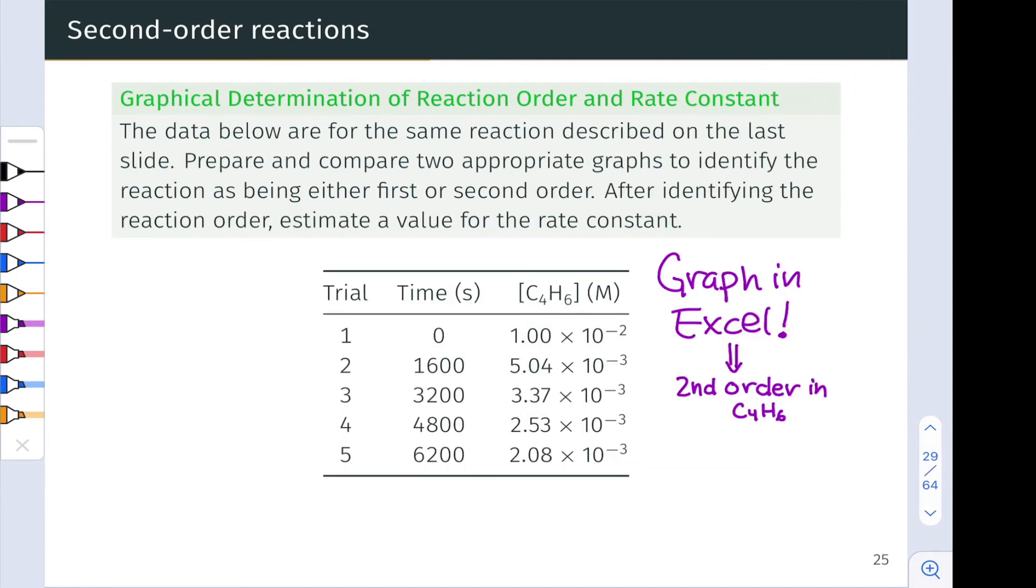As with the second problem, I don't want to spend a ton of time on this one because it's going to require you to do some graphing in Excel. We have the data for the reaction in the previous problem, the dimerization of butadiene. And this problem asks us to verify that this reaction is, in fact, second order in butadiene by transforming the data that's given here. And if you do that, and you look at a plot, for example, of the natural log of C4H6 concentration versus time, this will appear nonlinear. However, if you look at a plot of 1 over the concentration of C4H6 versus time, this will appear linear. And this allows us to conclude that the reaction is second order in C4H6.